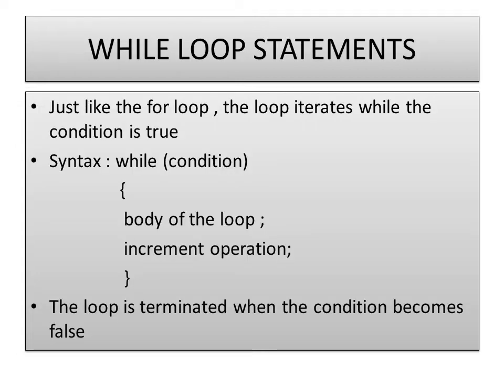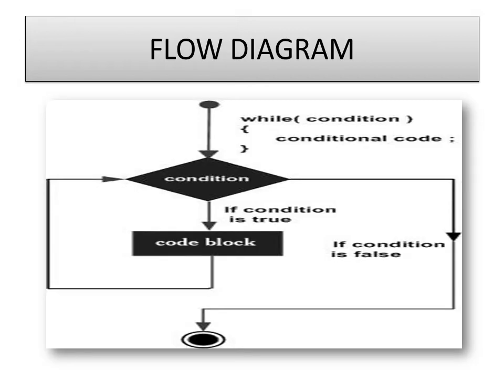Next is the while loop statement. Just like the for loop, the loop iterates while the condition is true. This is the syntax: while (condition), body of the loop — and the increment operation is done inside the body itself. It will continue till the condition becomes false. The loop is terminated when the condition becomes false. The flow diagram shows: approached by condition, if true execute the code block and repeat the cycle, if false go to the next statement sequentially.